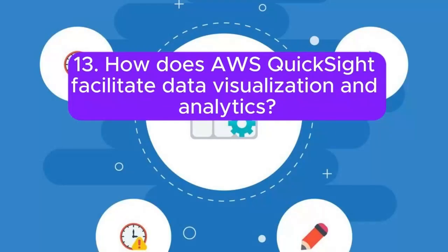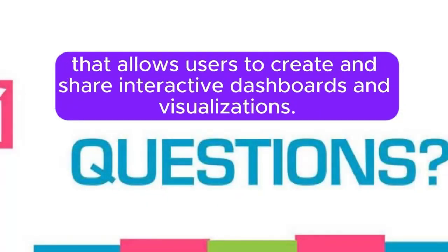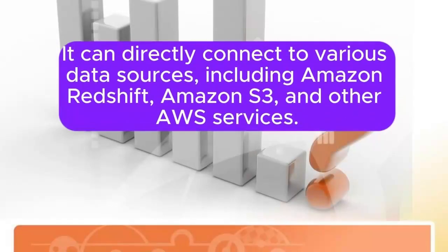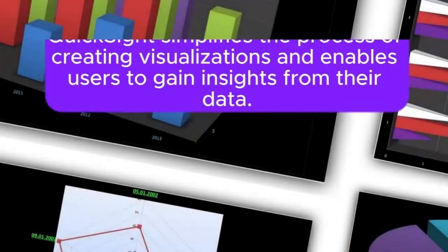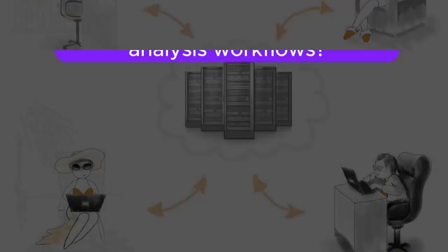13. How does AWS QuickSight facilitate data visualization and analytics? Answer: Amazon QuickSight is a business intelligence (BI) service that allows users to create and share interactive dashboards and visualizations. It can directly connect to various data sources, including Amazon Redshift, Amazon S3, and other AWS services. QuickSight simplifies the process of creating visualizations and enables users to gain insights from their data.